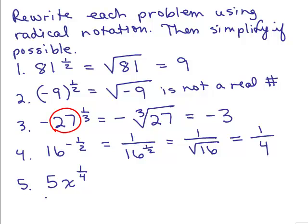And the last one here, 5x to the 1 fourth. Just like number 3, the 5 is not being raised to the 1 fourth power. That's like 5 to the first power. So the 5 is sort of like the coefficient, and x to the 1 fourth means the fourth root of x. And that's as far as you could go here, because we don't know what x is.